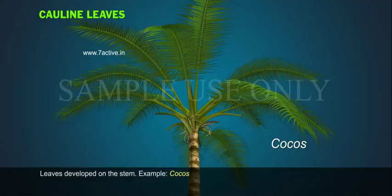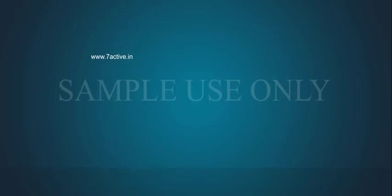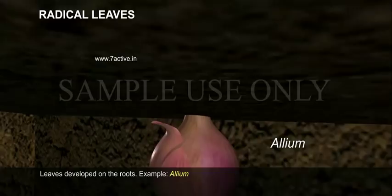Cauline leaves: leaves developed on the stem. Example: Cocos. Rameal leaves: leaves developed on the branches. Radical leaves: leaves developed on the roots. Example: Allium.